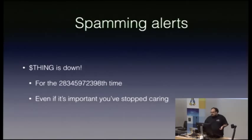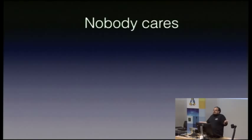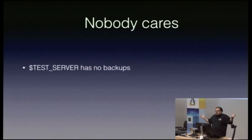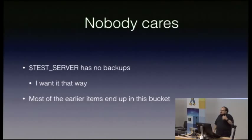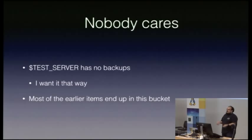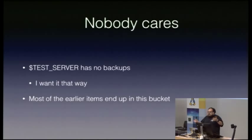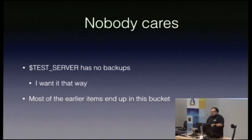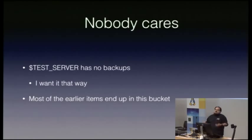Alert logs are really helpful here. And there are alerts for stuff that nobody cares about — my test server has no backups. Well, it's a test server; it gets rebuilt from Puppet. I don't care, I want it that way. Nearly all the earlier items lead to people stopping caring. If I'm getting alerted for something I don't care about, it's no different than the emails sent from HR to tell me to stop doing stuff. It becomes spam in my inbox — or spam waking me up at night. It's the result of a very bad spiral, and it effectively lowers your system's availability in a really subtle and insidious manner.